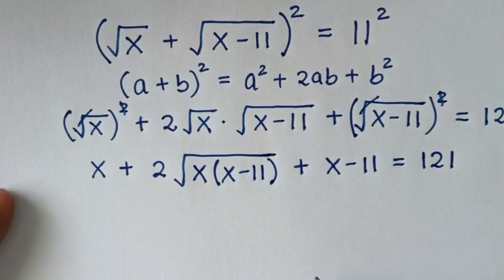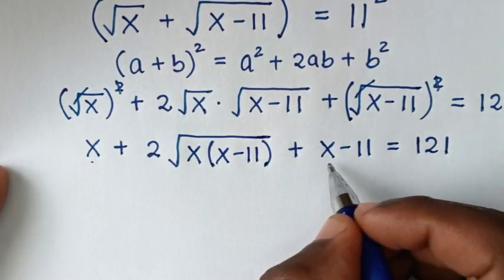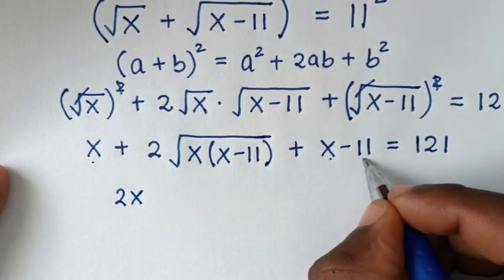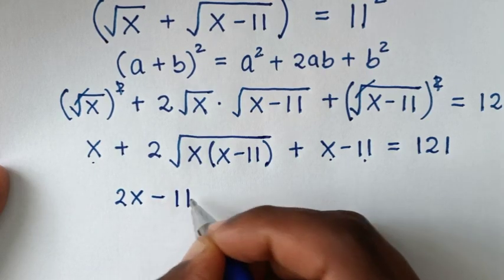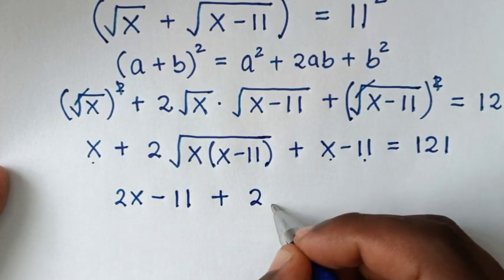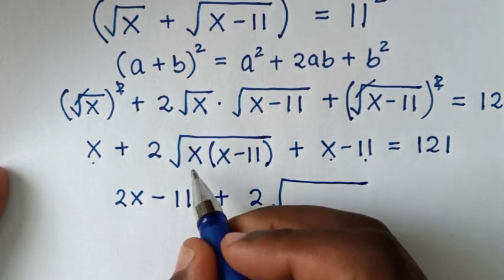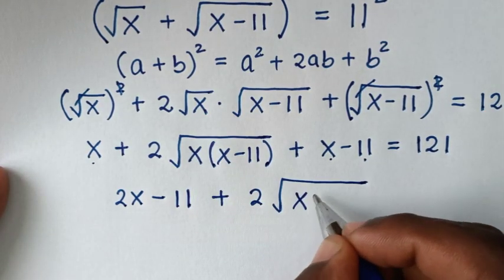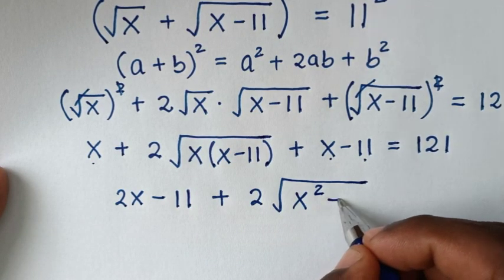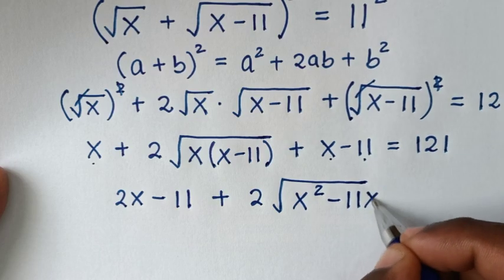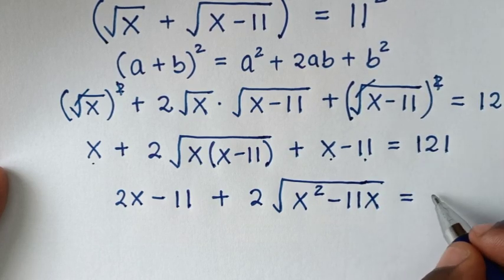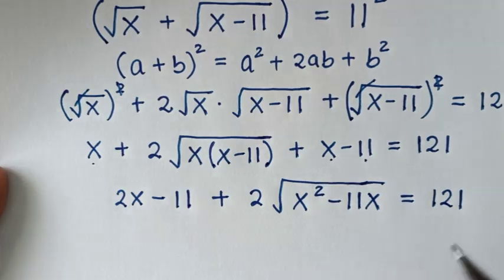In the next step, x plus x gives 2x. Then we have plus 2 times the square root of x squared minus 11x, and this is equal to 121.